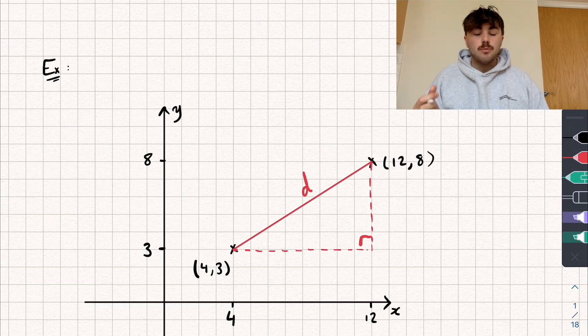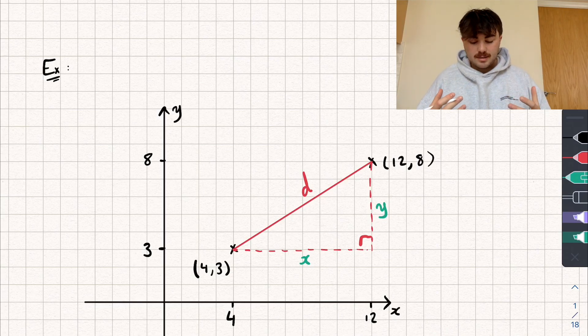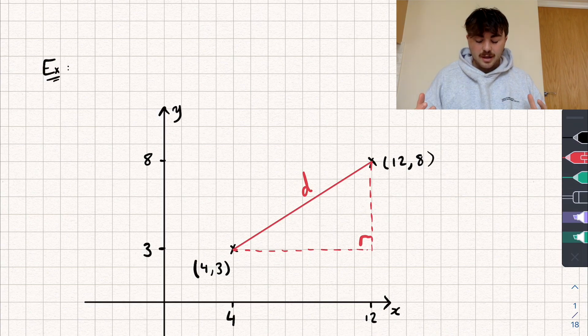So if I could find the two missing side lengths, I'll call them X and Y for now, I could say that X squared plus Y squared is equal to D squared. And therefore I could rearrange and find the value of D, which is what we want. So how do we find the values of X and Y? Well, it's actually really easy and we'll start off with our value of X.